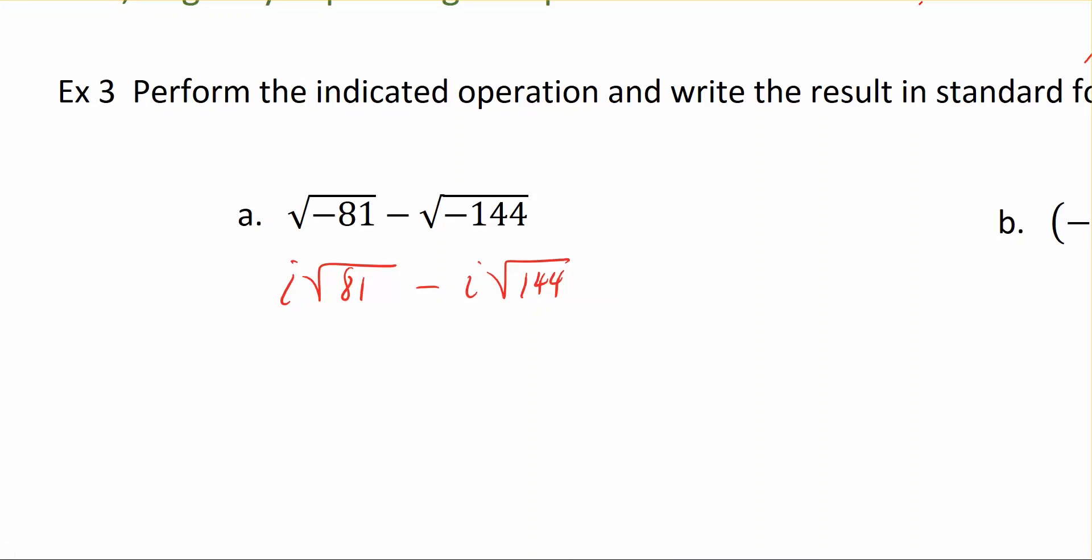Now we can take the square root of 81, which is 9, and we still have an i there, minus the square root of 144, which is 12i. Simplify 9i minus 12i and you get negative 3i. So the key is first you want to express these in terms of i, and then you simplify from there.